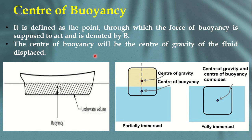Just as the weight of a body is assumed to act at a single point called the center of gravity, and area of any object passes through a single point called the centroid — similarly, the force of buoyancy acts in the upward direction, and if this entire force is assumed to act through a single point, that point is called the center of buoyancy.